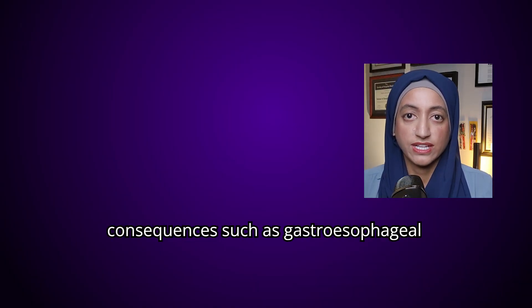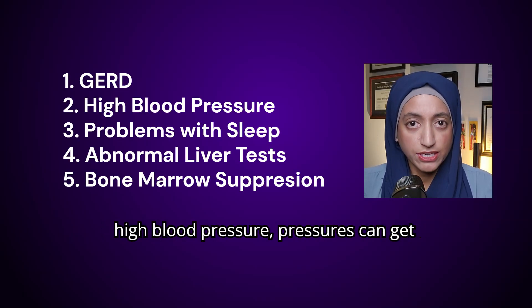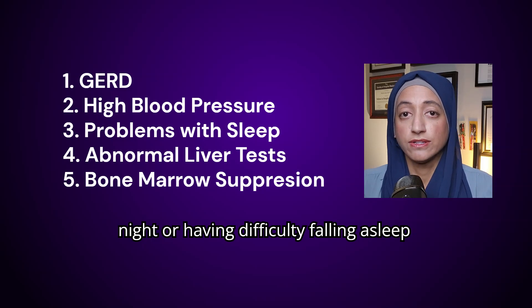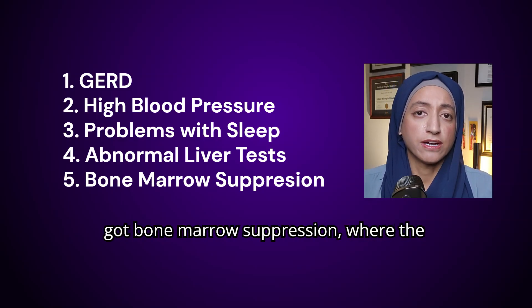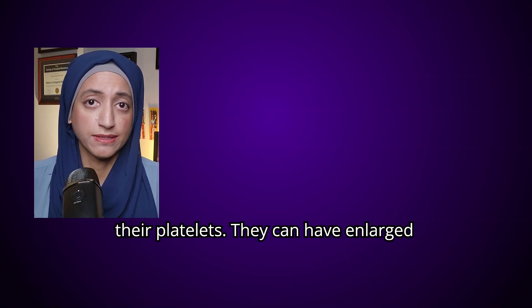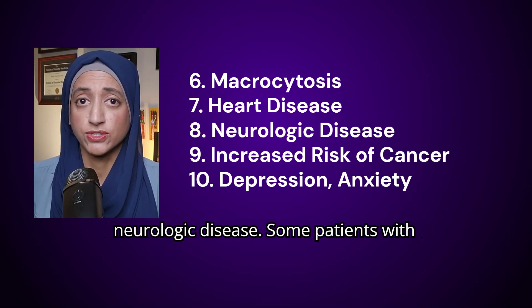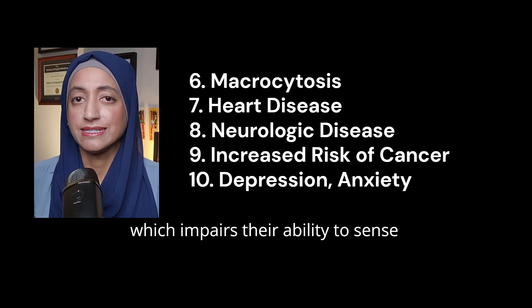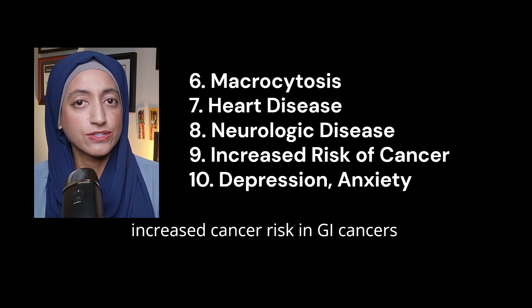Common medical consequences include gastroesophageal reflux disease — manifested by heartburn — and it can cause ulcers. You have high blood pressure, sleep disturbances such as insomnia, waking up in the middle of the night, or difficulty falling back asleep. Abnormal liver enzymes are usually seen on blood testing. There's bone marrow suppression where platelets have difficulty being produced, and patients with longstanding alcohol use will have a deficiency in platelets. They can have enlarged red blood cells, which can impair function. We have heart disease, neurologic disease — some patients with longstanding alcohol use disorder can develop neuropathy, which impairs sensation and can cause disabling pain. There is also an increased cancer risk in GI cancers and breast cancer.